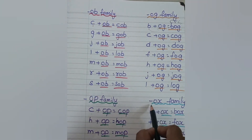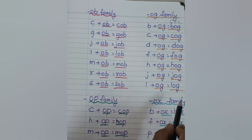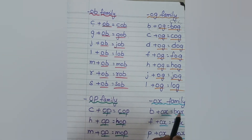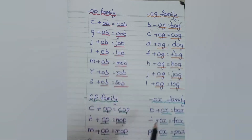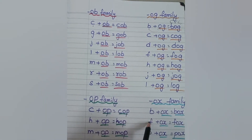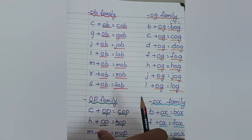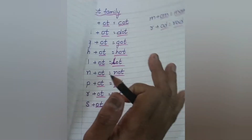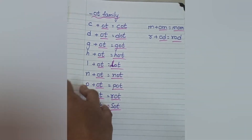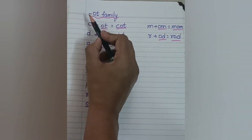Let us read the next family — OX family. B, OX — box. F, OX — fox. P, OX — pox.